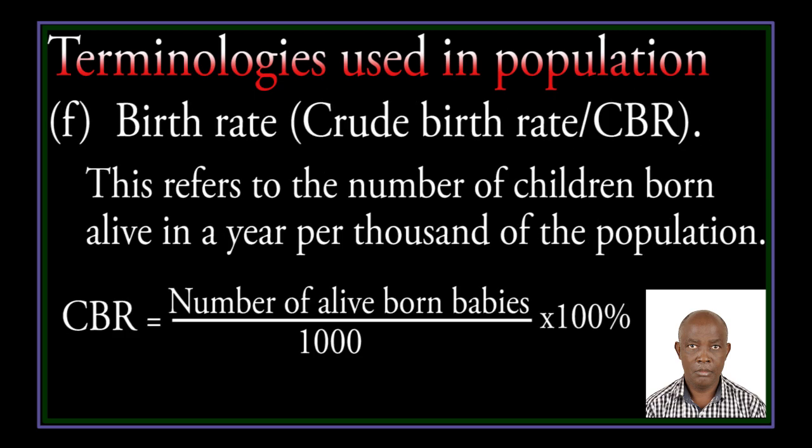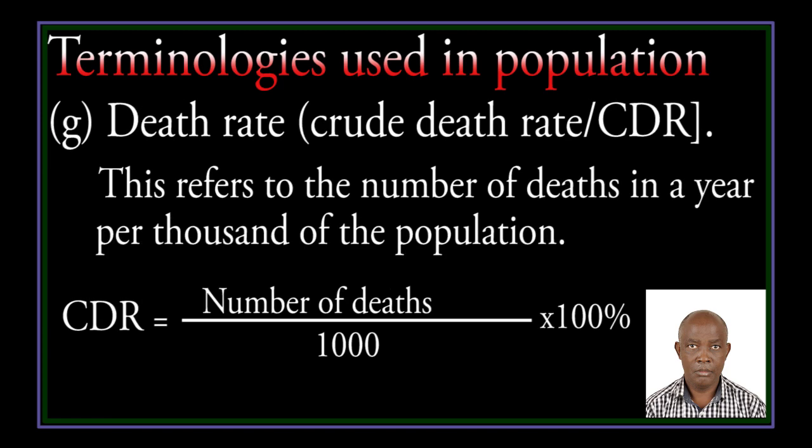Crude birth rate: this refers to the number of children born alive in a year per thousand of the population. It is expressed as a percentage. Crude birth rate equals the number of alive-born babies divided by one thousand, times 100%. Crude death rate: this refers to the number of deaths in a year per thousand of the population. Crude death rate equals the number of deaths divided by one thousand, times 100%.